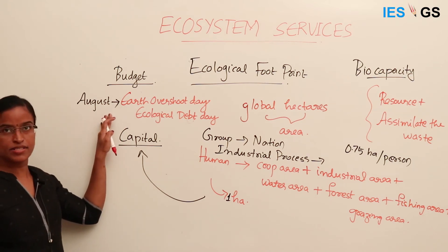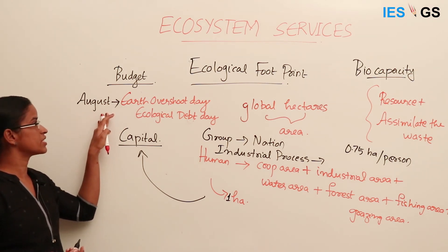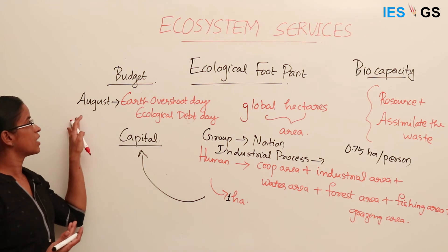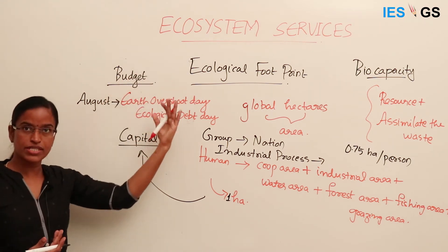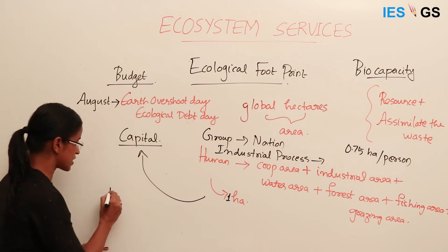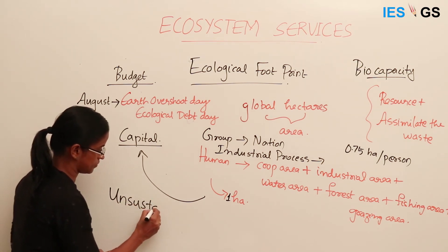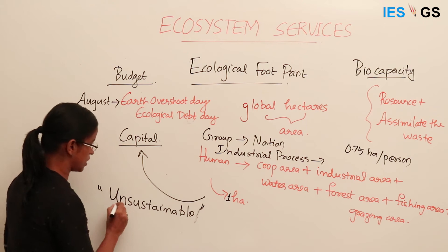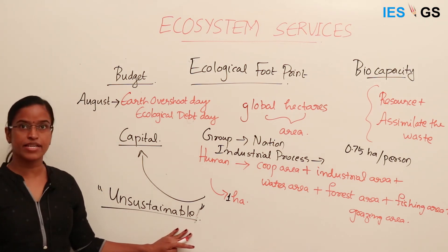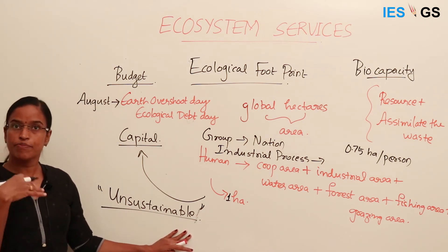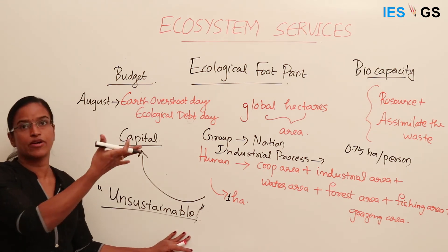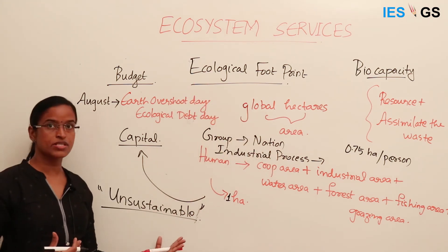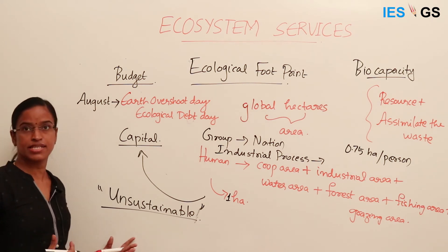Before reaching December — from January to August itself — we are running out of the budget that the earth is providing us. This means our process and our way of living is unsustainable. For a sustainable way of living, our ecological footprint should be less than the biocapacity. When ecological footprint is more than the biocapacity, that process or entity is going in an unsustainable way.